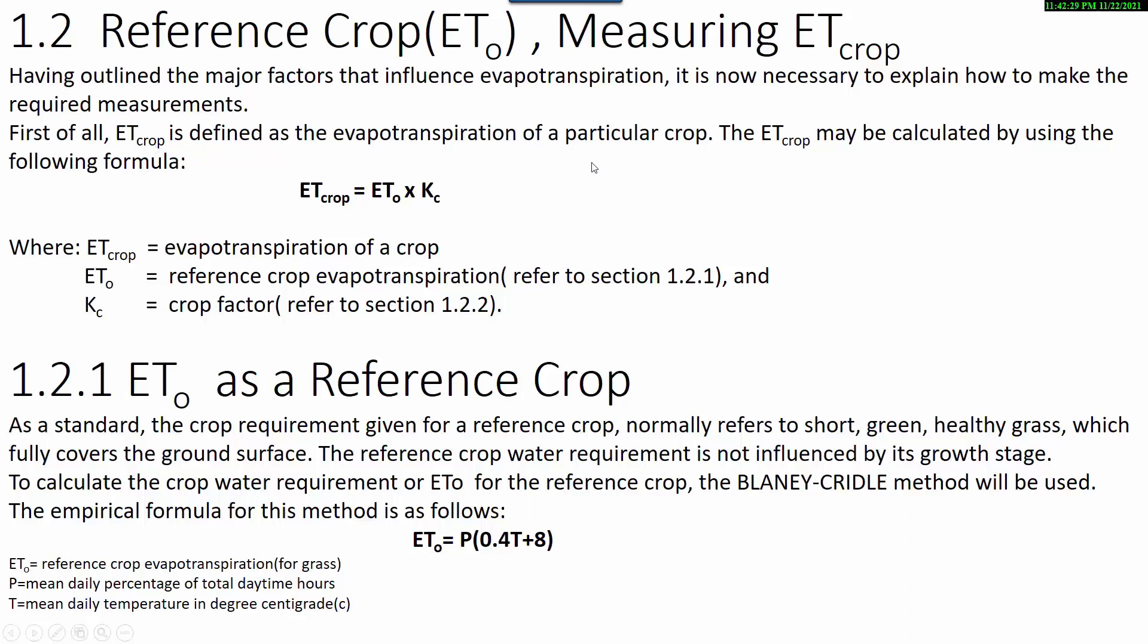Crop evapotranspiration is defined as the evapotranspiration of a particular crop, for example cotton, wheat, or rice. The crop evapotranspiration may be calculated using the following formula: ETcrop = ETo × Kc, where ETcrop is evapotranspiration of a crop, ETo is reference crop evapotranspiration, and Kc is the crop factor.